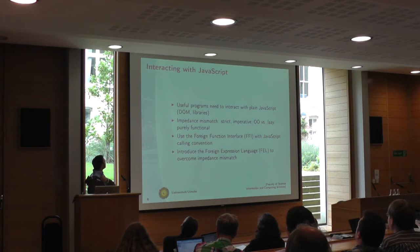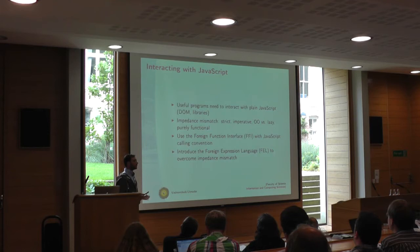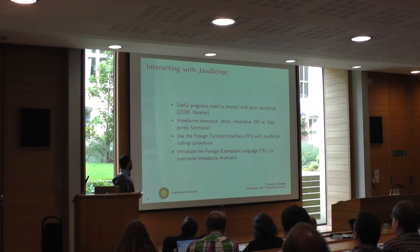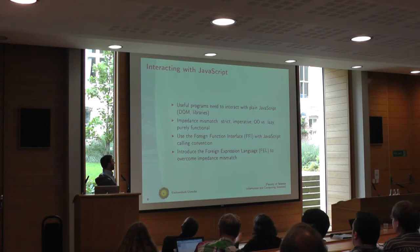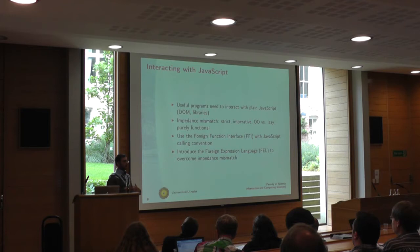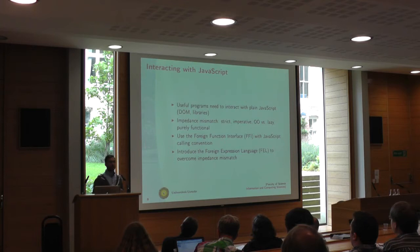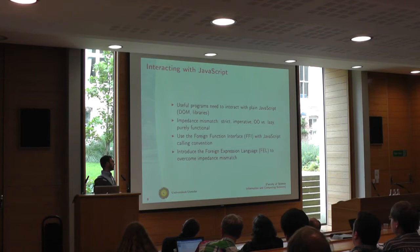We also need to interact with JavaScript, because JavaScript things are out there — like jQuery and other frameworks which make it easy to manipulate the DOM and model data. But JavaScript, as we said, is not nice. And on top of that, it's also strict, imperative, and object-oriented, whereas Haskell is lazy and purely functional. So we need some way to bridge this divide. We do this with a foreign function interface, extended with something we call the foreign expression language, which acts as glue between Haskell and JavaScript.